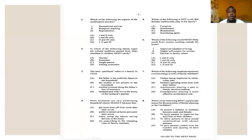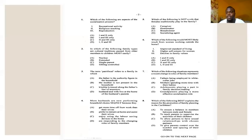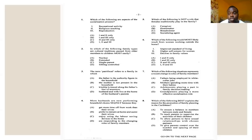Number one says: which of the following are aspects of the socialization process? One says recreational activity, two says religious teaching, three says reproduction. Socialization is teaching you how to function as a good citizen in society. Recreational activities and religious teaching qualify, but reproduction is the continuation of the human race and has nothing to do with the socialization process. So the answer for number one is recreational activity and religious teaching — a combination of one and two.